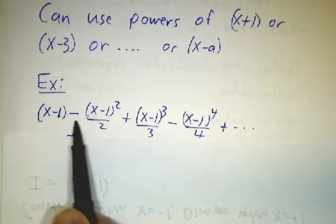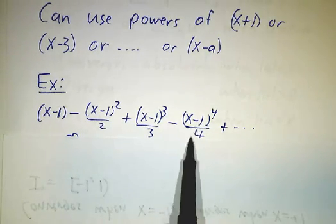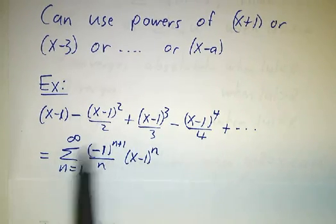x minus 1 minus x minus 1 squared over 2 plus x minus 1 cubed over 3 minus x minus 1 to the 4th over 4 and so on, which is the sum of this form.